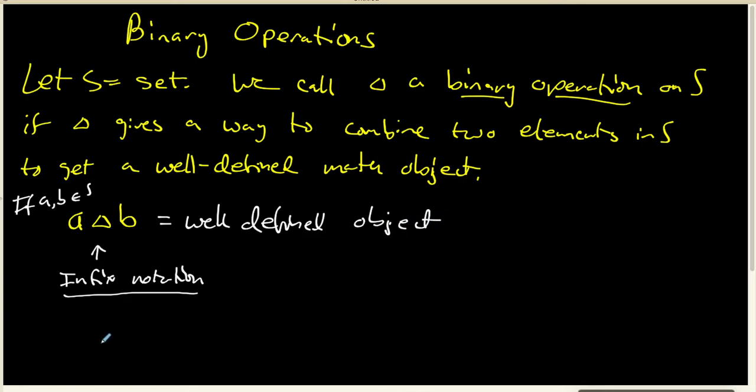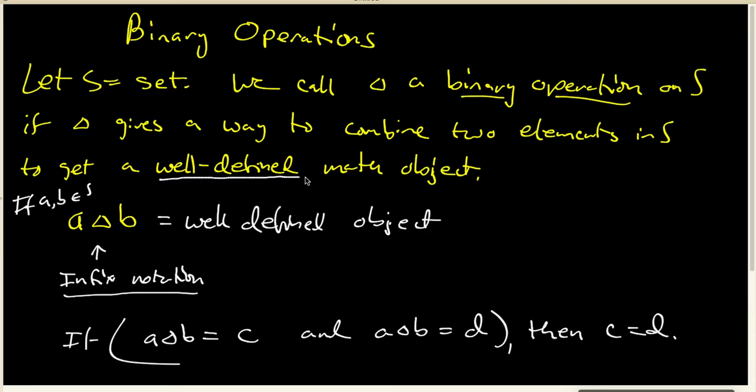What that really means is that if A triangle B equals C and A triangle B also equals D, then C and D must be the same mathematical object. That's what the phrase 'well-defined mathematical object' means, and this will play an important role later in the semester.